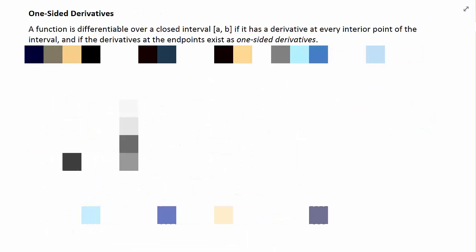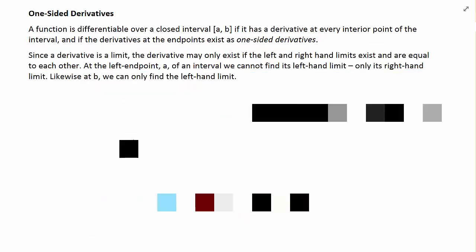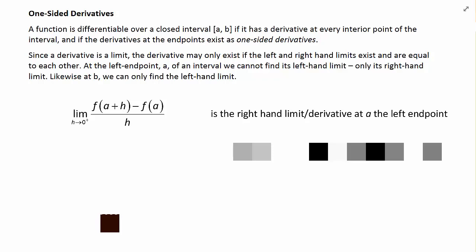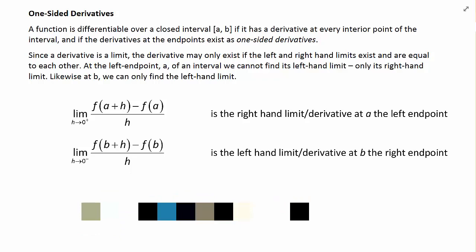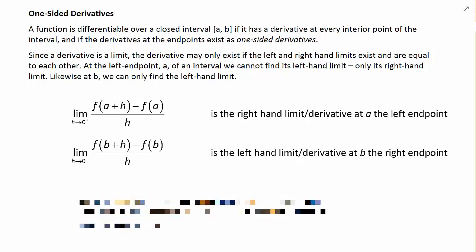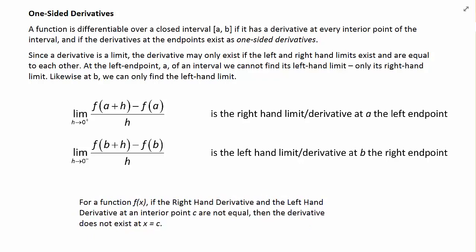One-sided derivatives. A function is considered to be differentiable over a closed interval ab if it has a derivative at every interior point of the interval, and if the derivatives at the end points exist as one-sided derivatives. Since a derivative is a limit, the derivative may only exist if the left and right hand limits both exist and if they are both equal to each other. At the left end point A of an interval, we cannot find its left hand limit, only its right hand limit. Likewise at B, we can only find the left hand limit. So for a function f of x, if the right hand derivative and the left hand derivative at an interior point C are not equal, then the derivative does not exist at x equals C.